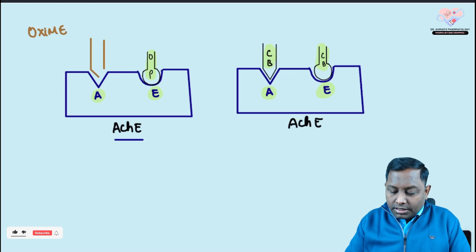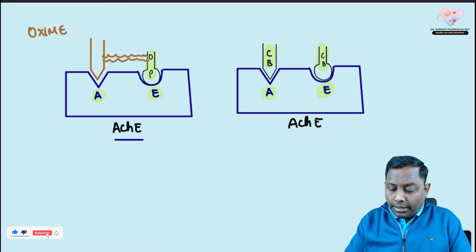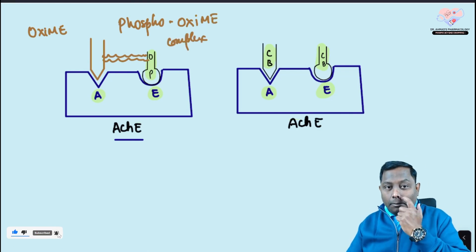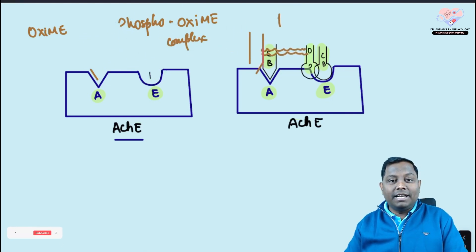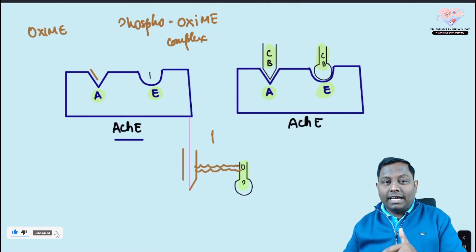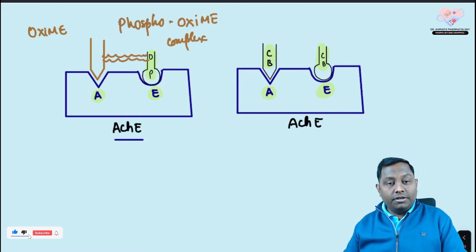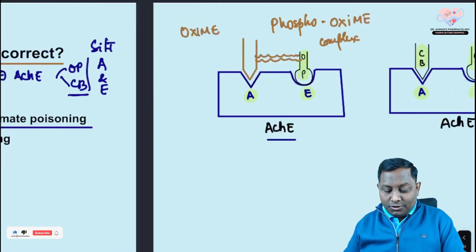Oximes bind at the anionic site and form a complex with the organophosphate. After forming this complex, it dissociates and is excreted, leaving both the anionic and esteratic sites vacant — restoring enzyme function. In carbamide poisoning, both sites are occupied, so oximes cannot work. That's why oximes are effective for organophosphate but not carbamide poisoning.